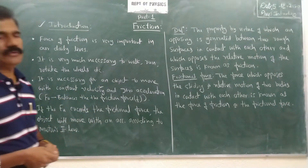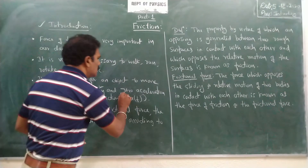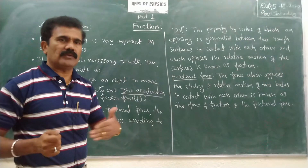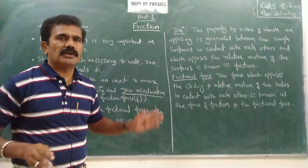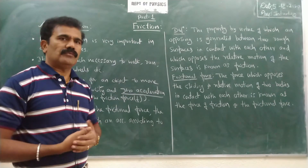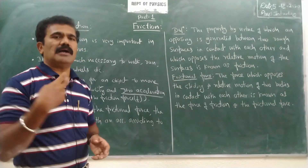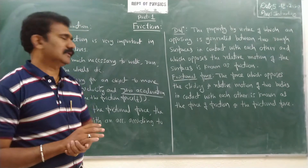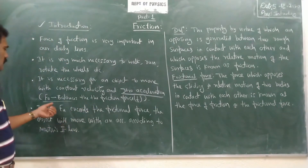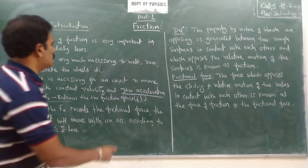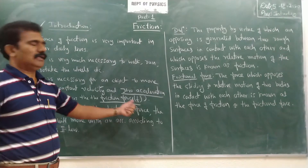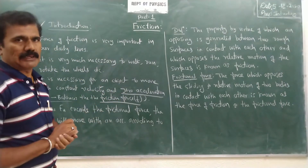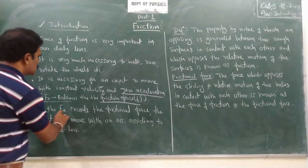Friction is necessary for an object to move with constant velocity. When a body moves with constant velocity, its acceleration is zero. According to Newton's first law, a body moving with constant velocity must continue with the same velocity unless an external opposing force — such as frictional force — acts on it. When applied force and frictional force balance each other, the body moves with constant velocity and zero acceleration.